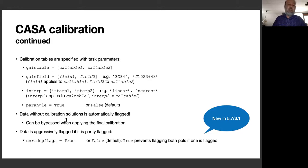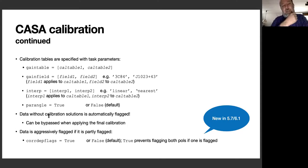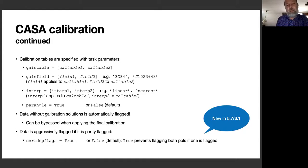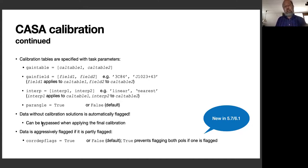If calibration data is flagged or absent in a calibration table, CASA will automatically flag the associated data. This flagging can be bypassed when applying the final calibration, but it's difficult to bypass when using the calibration table for another calibration step. Also by default, CASA quite aggressively flags data that's partly flagged — for example, if you flag the left circular polarization, CASA will automatically also flag the right circular polarization, because a single polarization isn't very useful for proper polarization calibration.